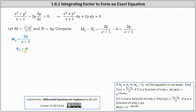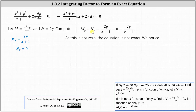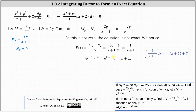We can see this is not an exact differential equation. The difference of the partial of M with respect to y and the partial of N with respect to x is 2y/(x+1) minus 0, which does not equal zero, confirming non-exactness. We now divide this difference by N = 2y. Dividing by 2y is equivalent to multiplying by 1/(2y), and we get 1/(x+1) — a function of x only. So p(x) = 1/(x+1), and the integrating factor is u(x) = e to the integral of 1/(x+1) dx = e to the natural log of (x+1) = x+1.